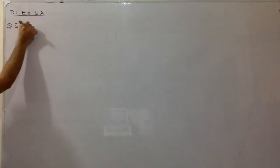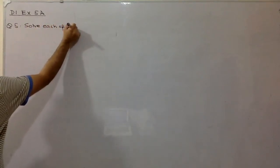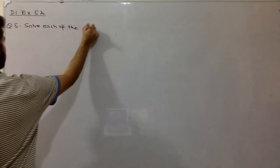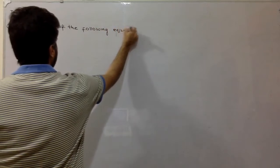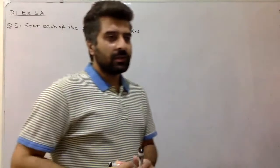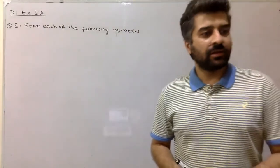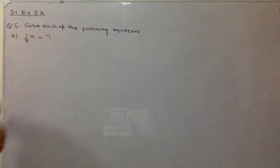Question number 5 says: solve each of the following equations. Let me write question number 5 from exercise D1 5a. Part number 1 is: 1 over 3x is equal to 7. We have to solve 1 over 3x equals 7.